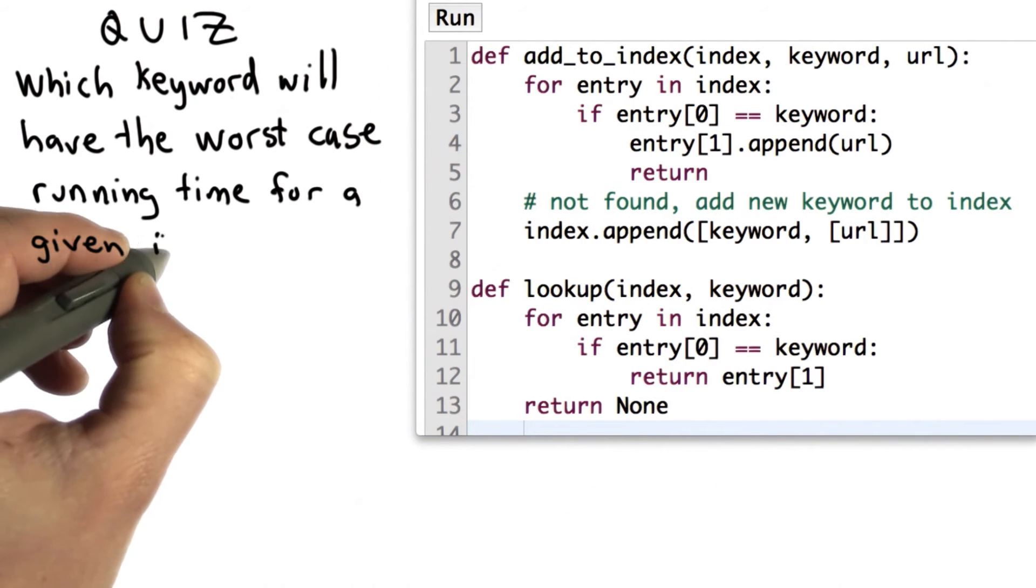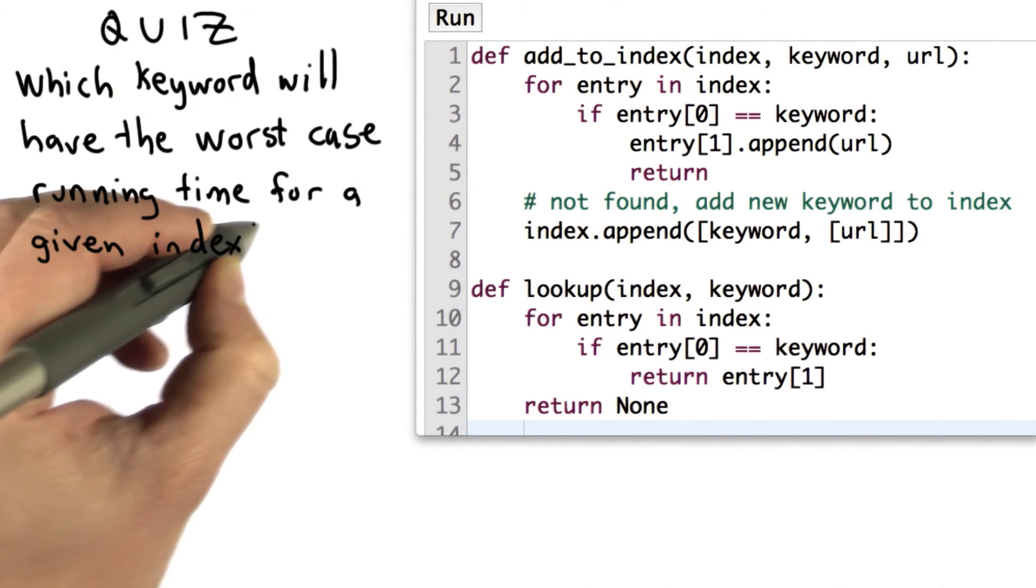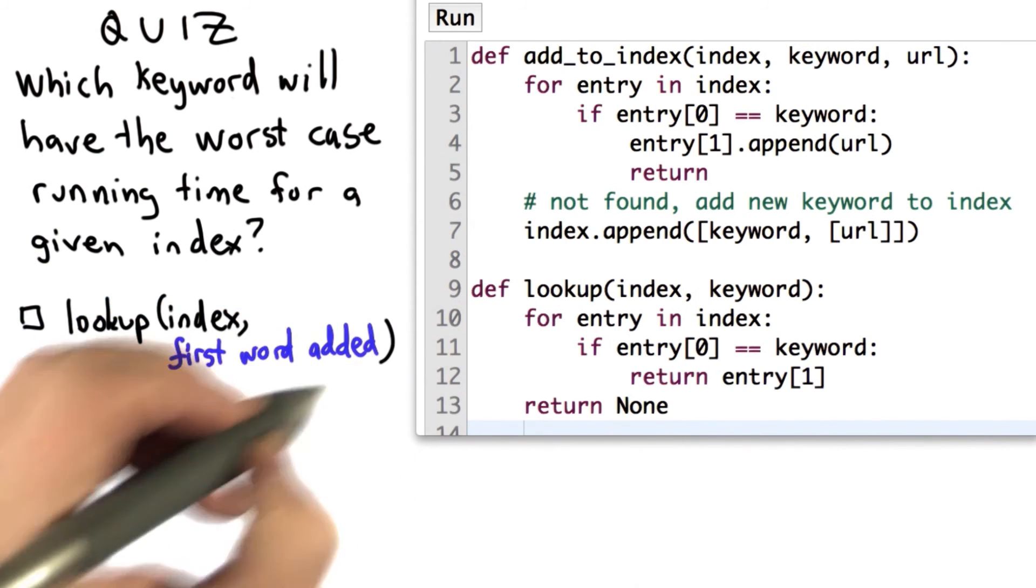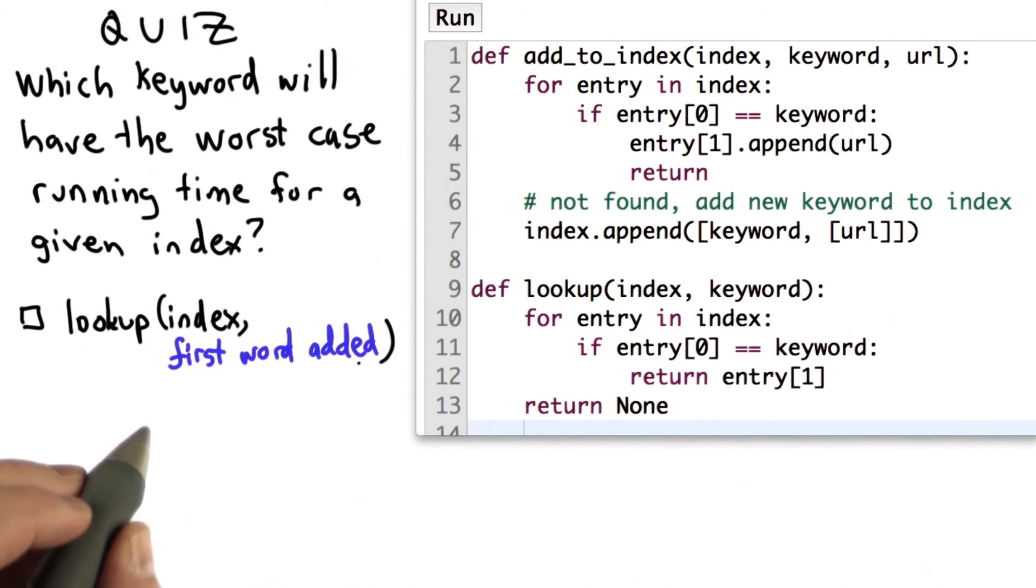So now we'll have a quiz to see if you understand what it means to be the worst case input and how the code for lookup works. The question is, which of these inputs will have the worst case running time? So the choices are doing lookup, passing in the index, and the first word that was added to the index.